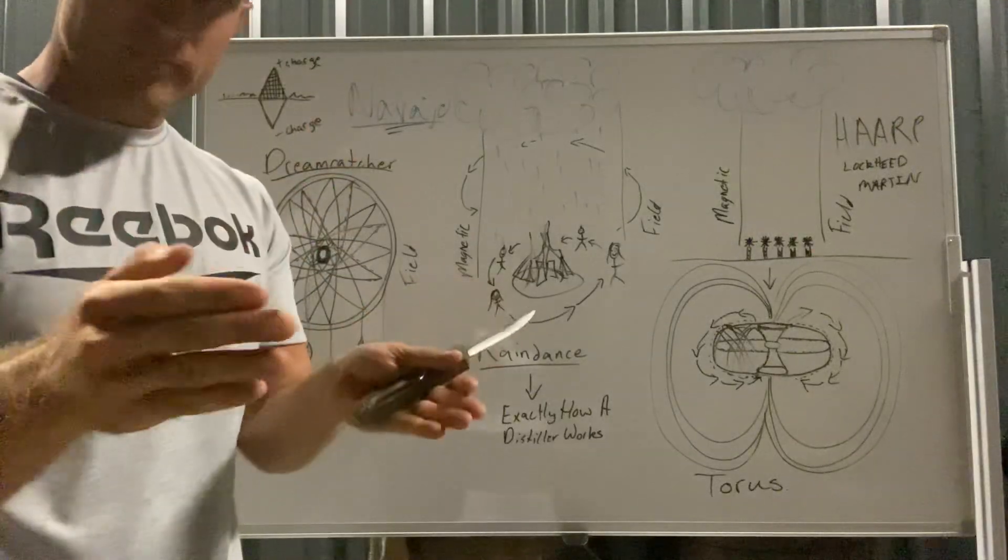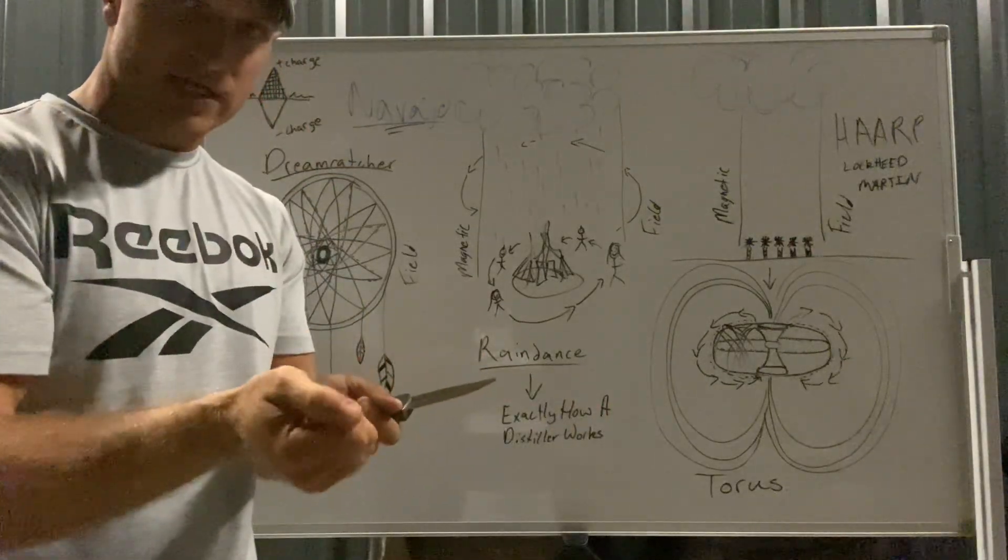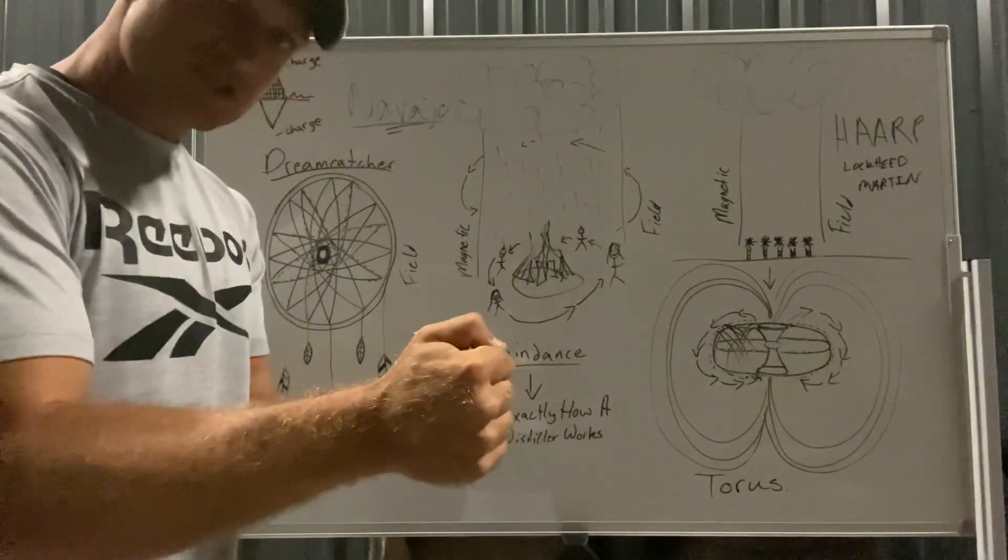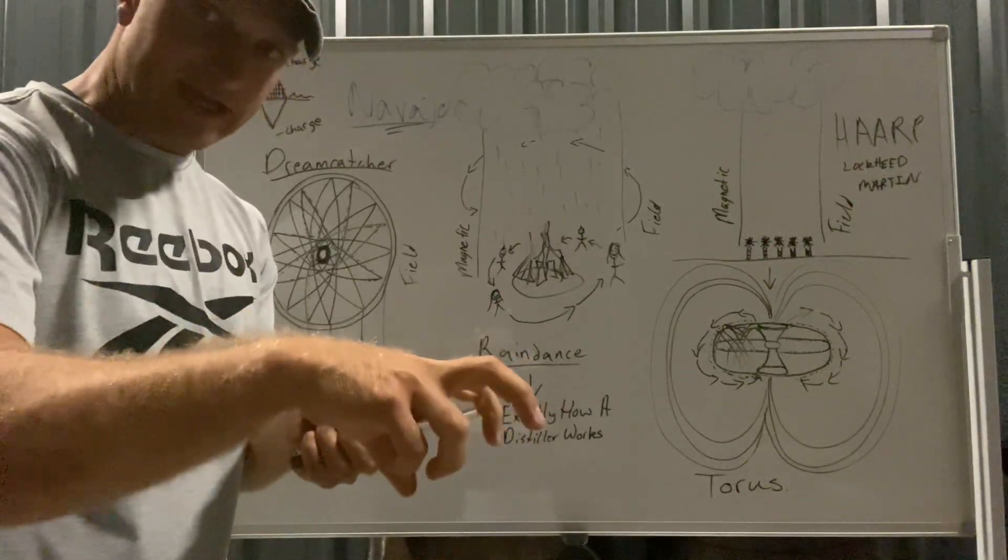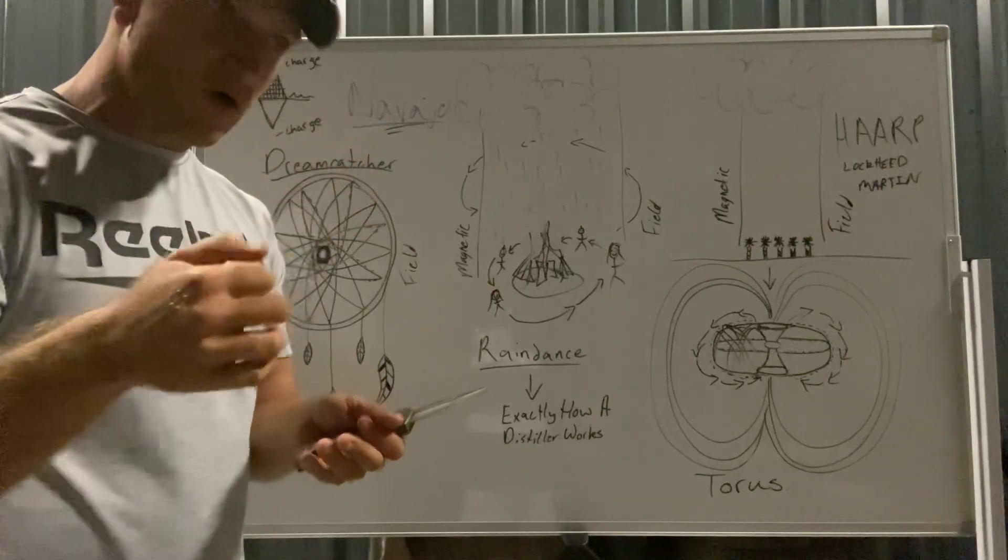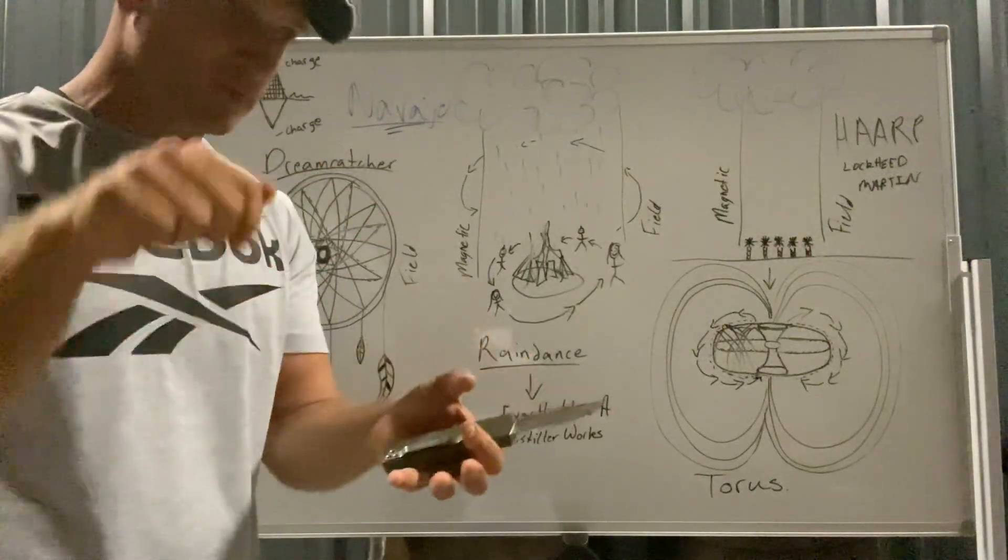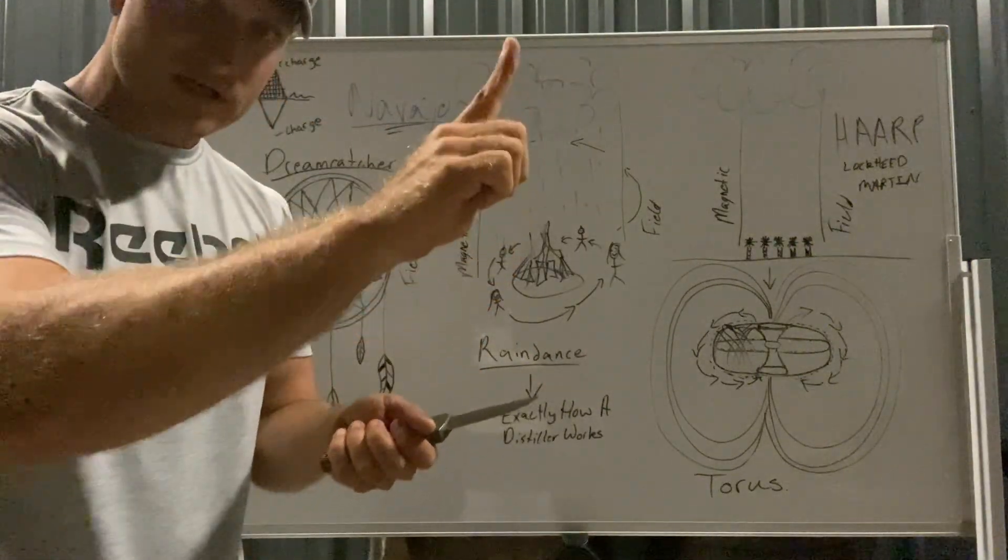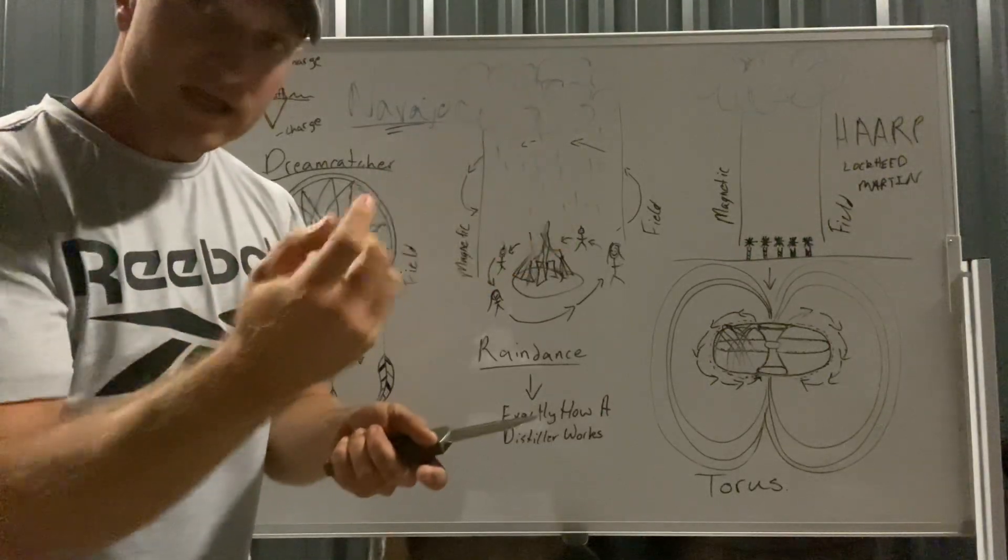I have a distiller in the house. It has a square pot with a heating element at the bottom. When I plug it in, it heats up that element and the water gets hot. Then the steam comes out this little hole at the top of the box that I put the water in.